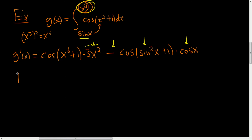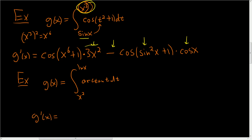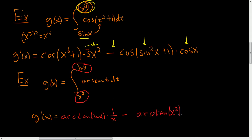Let's do another example. Little g of x is the definite integral from x squared to ln x of arctan t, dt. When we take the derivative, we first plug in the natural log for t: arctan of ln x. Then multiply by the derivative of ln x, which is 1 over x. Subtract, and plug in x squared: arctan of x squared. Then multiply by the derivative of x squared, which is 2x.